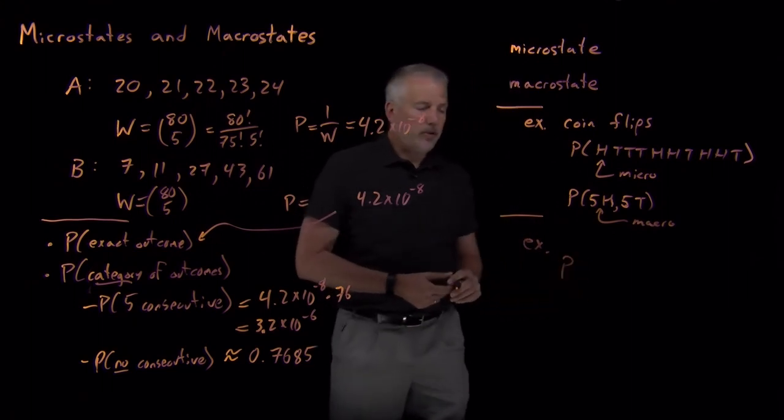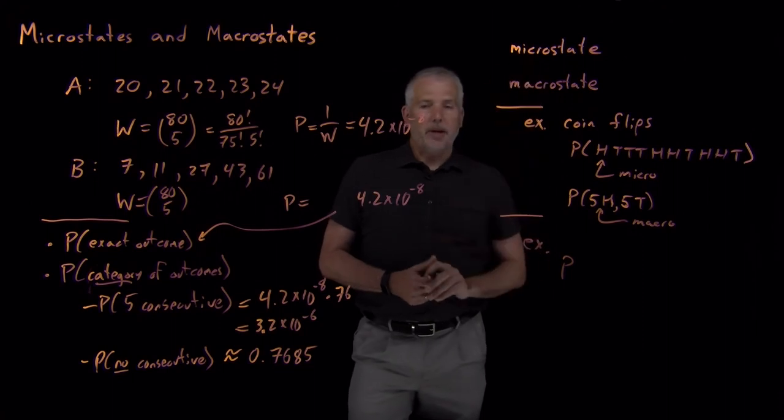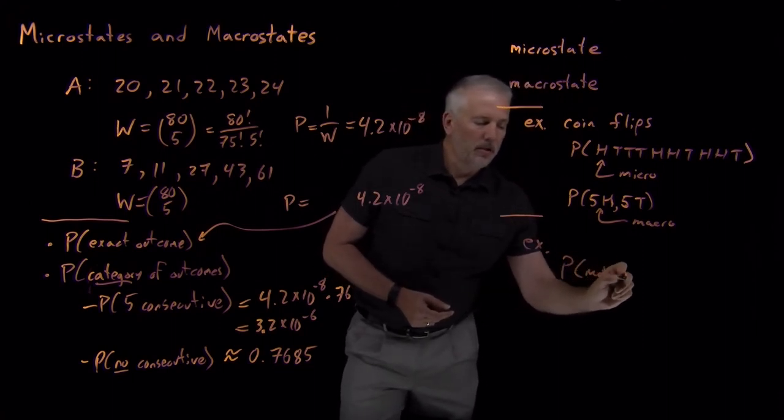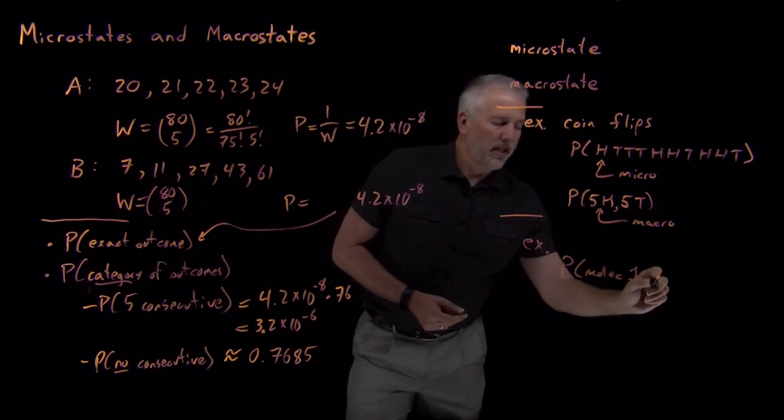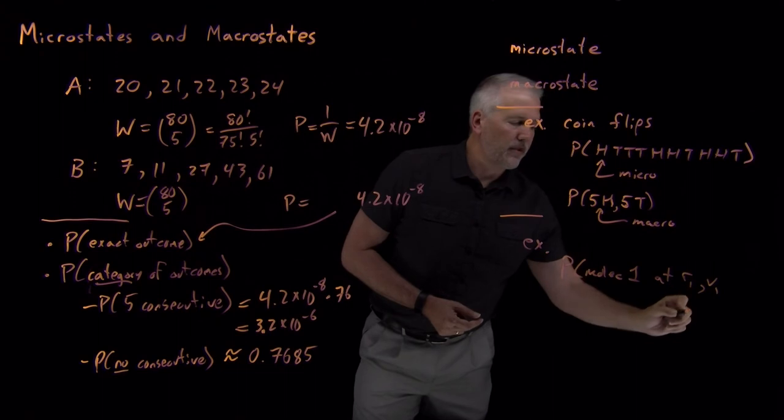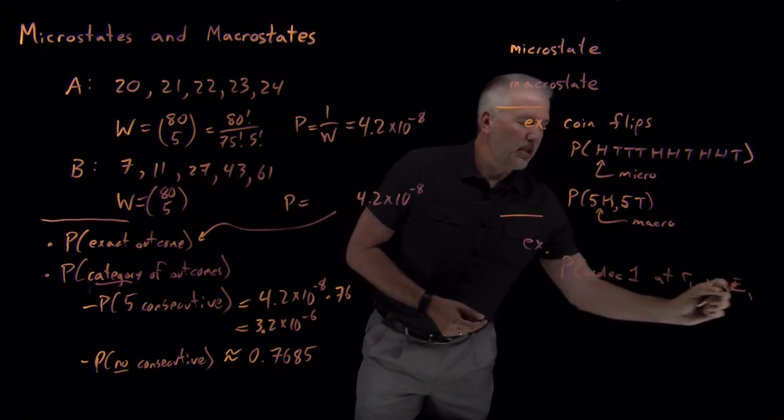As a chemistry example, if I were to say to describe a microstate, I might say what's the probability that molecule number one is at some position R1 with velocity V1 and energy E1.